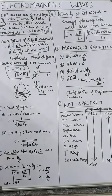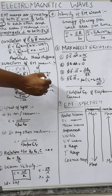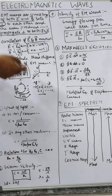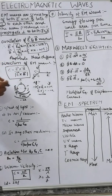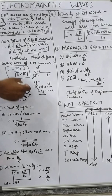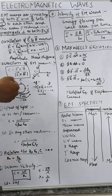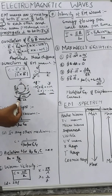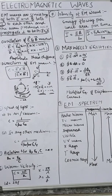If you want to do j cross k, you will get a positive value. But if you do k cross j, that means the reverse direction, you will get a negative value.